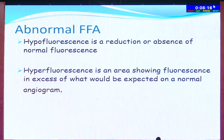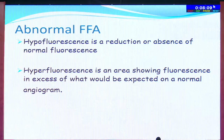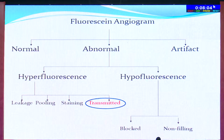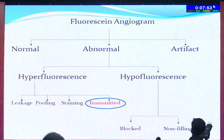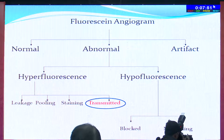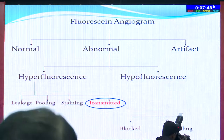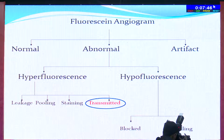On an abnormal fluorescent angiogram, you can have either hypofluorescence or hyperfluorescence. Hypofluorescence is a reduction or absence of normal fluorescence, while hyperfluorescence is an area showing fluorescence in excess of what is expected. In hyperfluorescence, there are four types: leakage, pooling, staining, or transmitted fluorescence. In hypofluorescence, you can have either blocked fluorescence or non-filling.